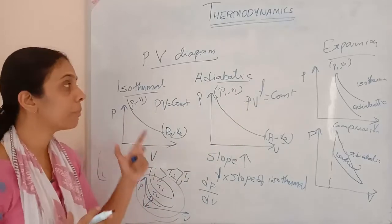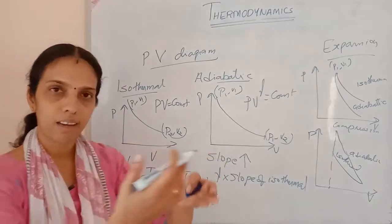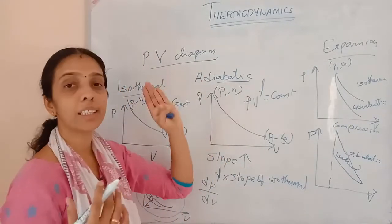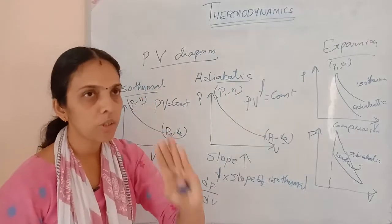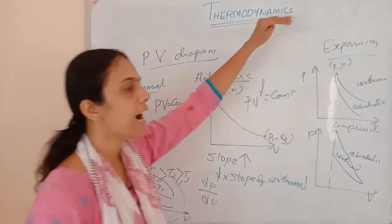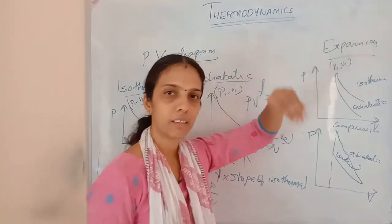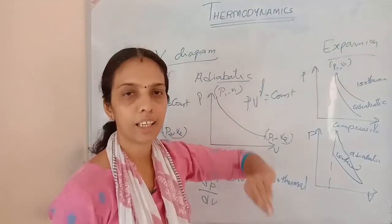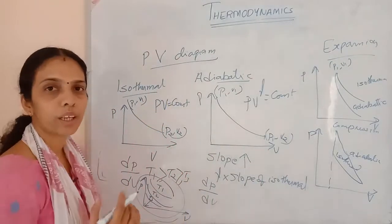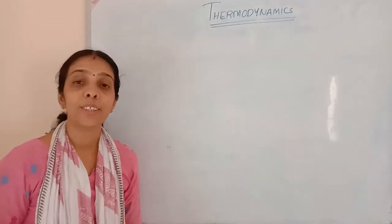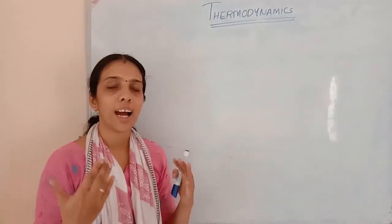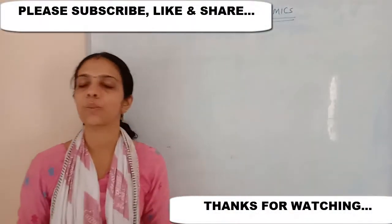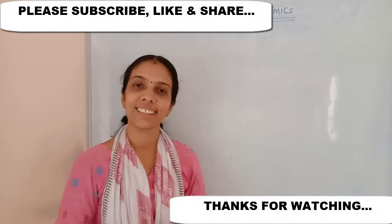Now you understand the PV diagrams. In expansion, isotherm is above and adiabatic is below. In compression, adiabatic is above and isothermal is below. These diagrams will be needed when we start heat engines. The next topic — work done in isothermal, adiabatic, isobaric, and isochoric processes — will be taken up in the next class.